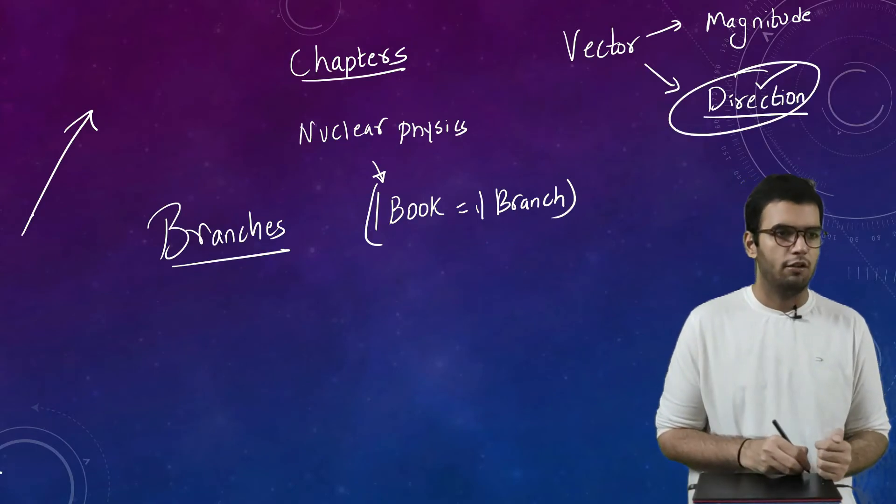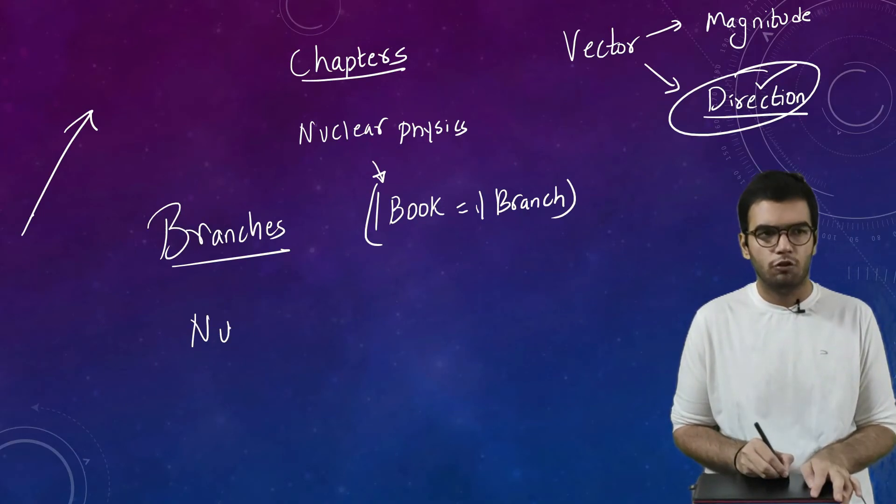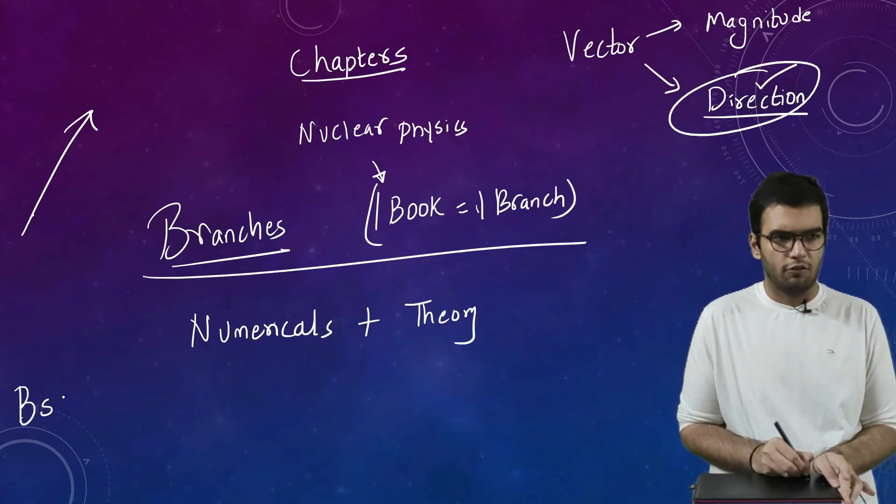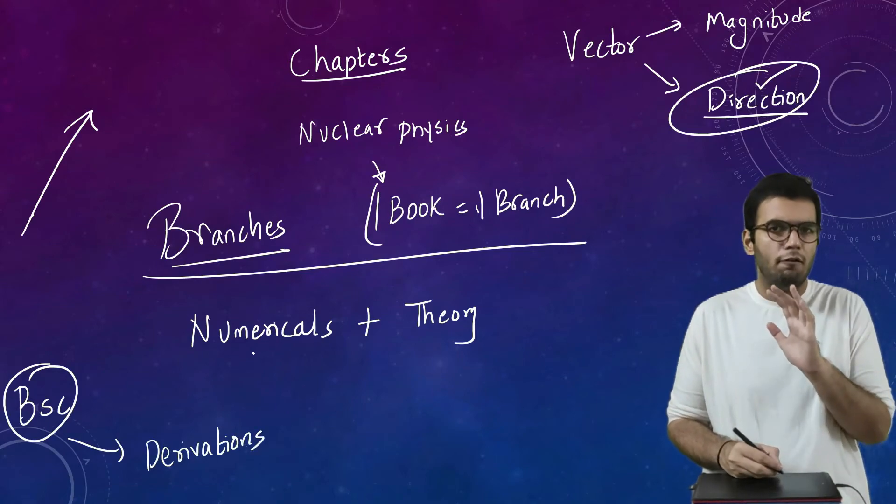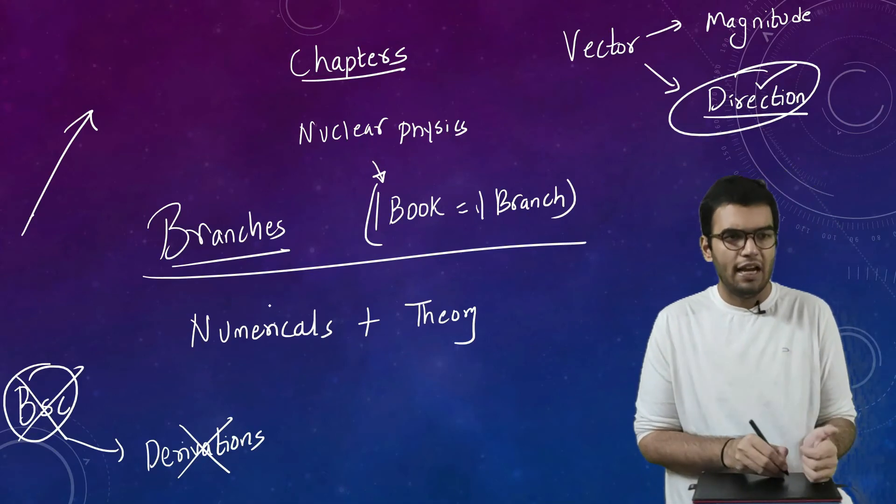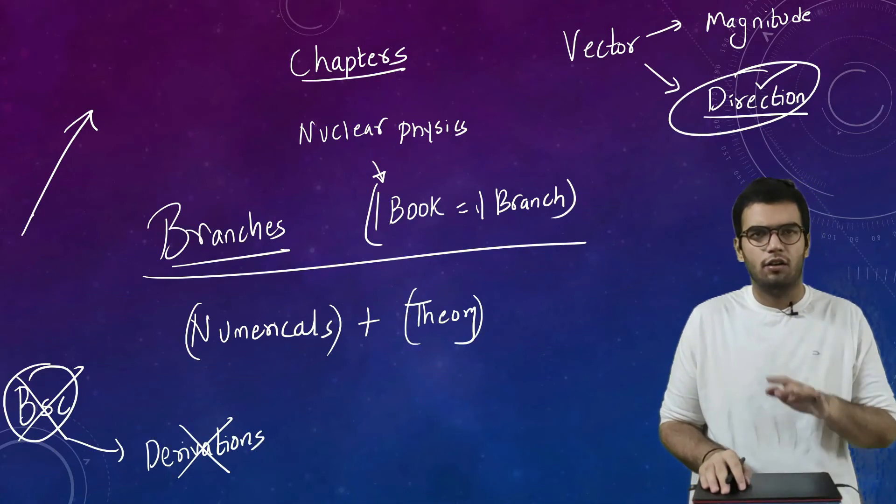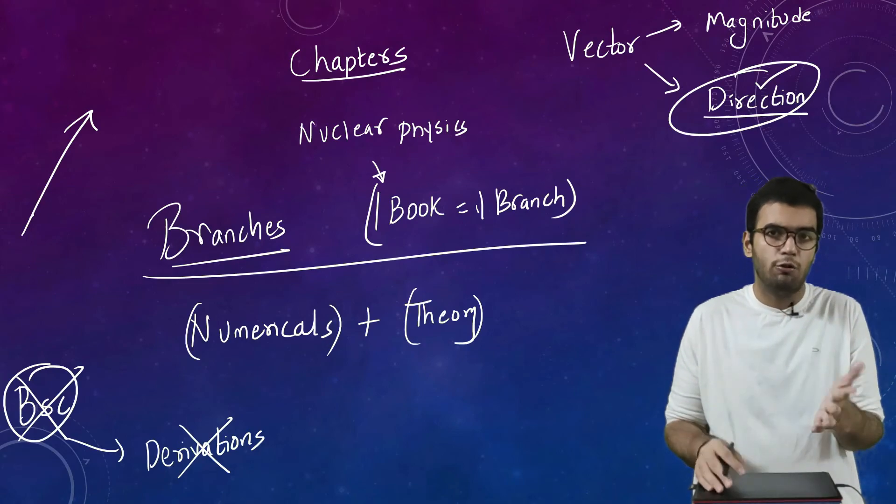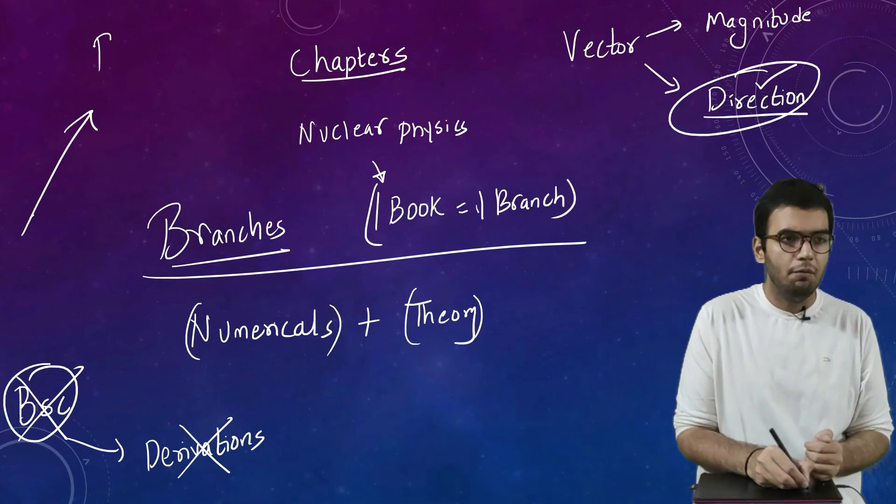Last thing which I would like to add is IIT JAM paper contains numericals as well as theory. Numericals plus theory. But if we talk about BSc Physics or BSc as a whole, BSc most of the time contains derivations, and derivations have no value in IIT JAM. Derivations are limited till BSc only. In IIT JAM there are always numericals and there is theory. Whatever theory is, is not like that what is the capital of India. No, theory is always conceptual, is also conceptual.